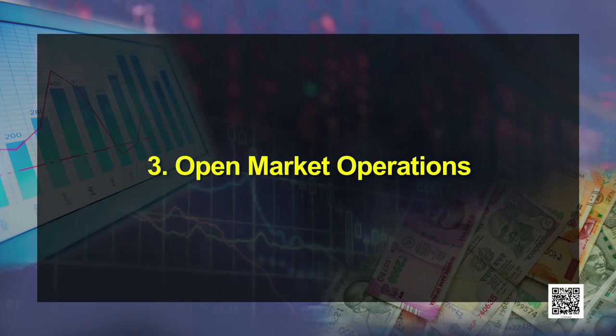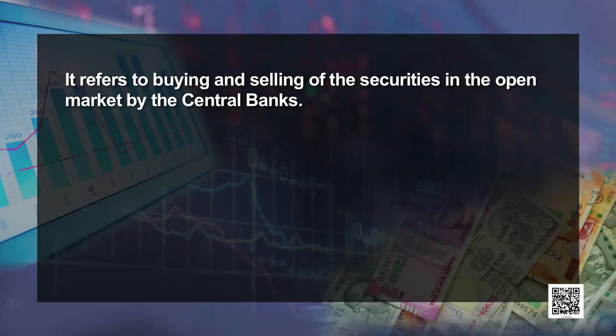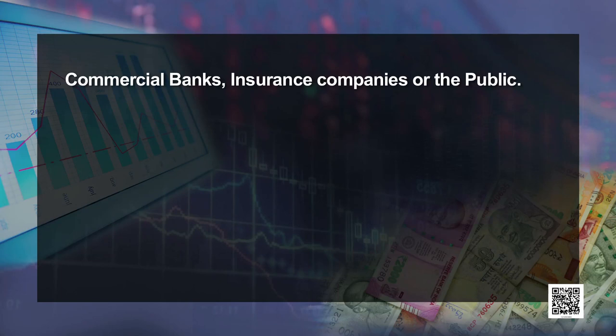The third tool is open market operations. Open market operations refers to buying and selling of securities in the open market by the central bank. The central bank tries to purchase or sell government securities in the open market, which are in turn purchased by commercial banks, insurance companies, or the general public. At the time of inflation, there is more purchasing power or more credit creation capacity with the banks. The central bank sells these securities, and when banks subscribe to those securities, they pay their money to the central bank, reducing their credit creation capacity.